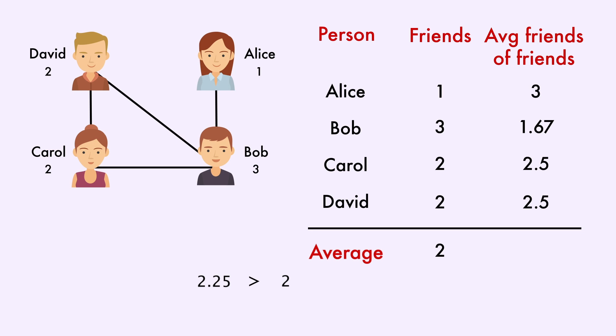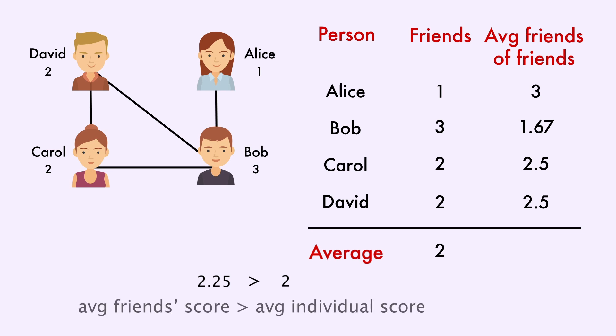If we add everything up and divide by the eight numbers that were yelled out, we get that the average friend has a score of 2.25. As you can see, this is slightly more than the popularity of the average individual. It turns out, so long as everyone doesn't have the same number of friends, this inequality will hold — the average friend will always be more popular than the average individual.